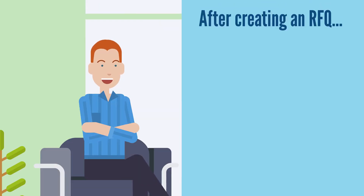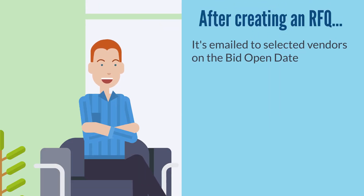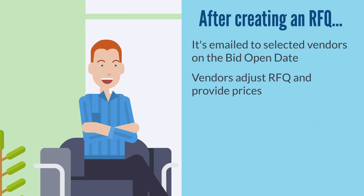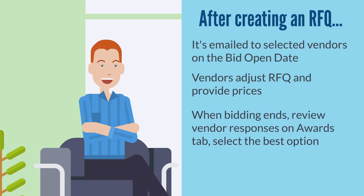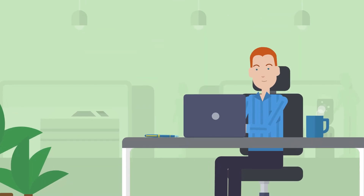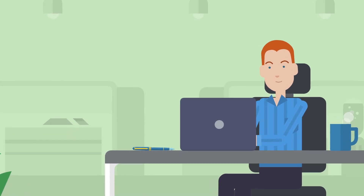After an RFQ has been created, it will be emailed to all your selected vendors on the bid open date. Your vendors will make any changes they need and record their prices for the items and pricing tiers you have indicated. When the bidding period closes, NetSuite adds an Awards tab to the Request for Quote record. On this tab, you can review the responses from your vendors and select the most desirable one. With the NetSuite Request for Quote feature, you can easily manage all your vendor quotes.